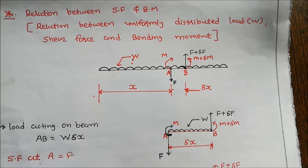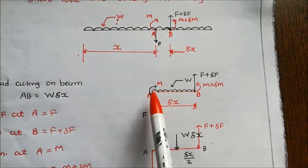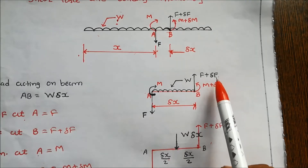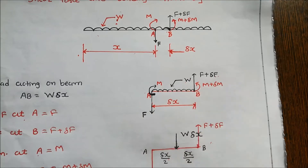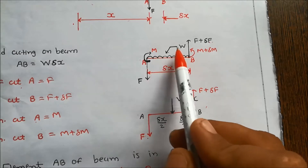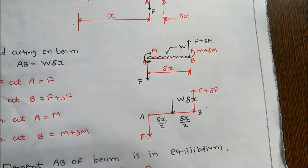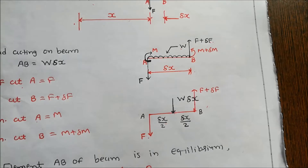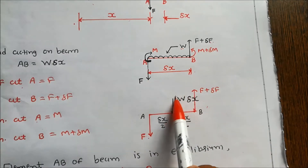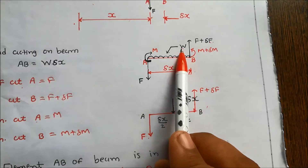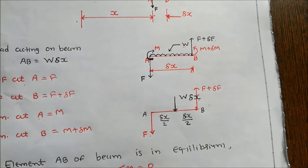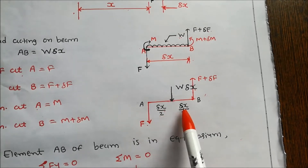UDL means uniformly distributed load. For the small portion AB, the shear force at A is F, shear force at B is F plus delta F, bending moment at A is M, and bending moment at B is M plus delta M. The UDL is W per unit length acting over length delta x, so the total load is W into delta x, acting at its center of gravity — that is, at delta x by 2 from each end.